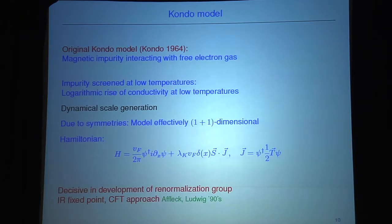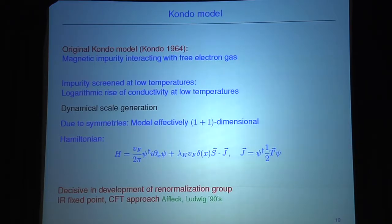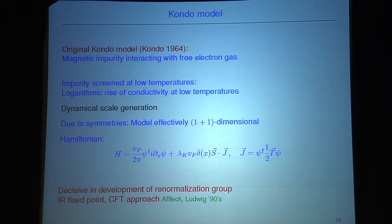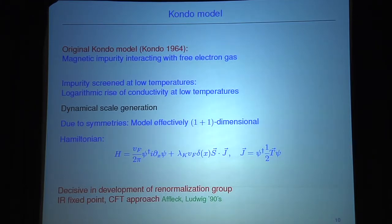The Hamiltonian for this 1+1 dimensional model has electrons in 1+1 dimensions given by chiral fermions, and an interaction at a point in space with the Kondo coupling — this is the impurity spin coupling to the current of the surrounding electrons. This model has been very decisive in the development of renormalization group theory. At the IR fixed point it can be described by a CFT; Affleck and Ludwig pioneered a CFT approach to determine the full spectrum at the IR fixed point.